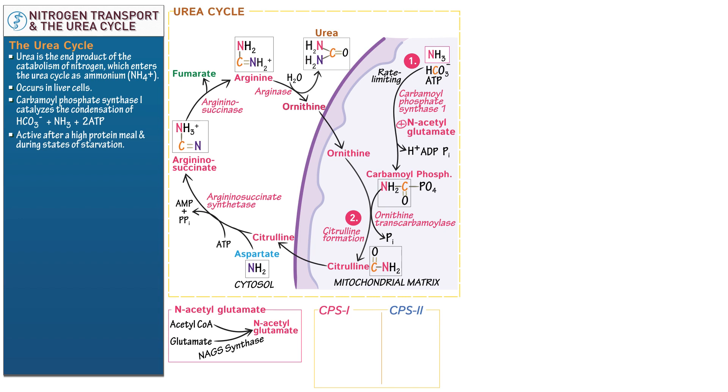In short, CPS1 exists in the mitochondrial matrix, whereas CPS2 is located in the cytosol, the cytoplasm. CPS1 uses ammonia as its nitrogen source, whereas CPS2 uses glutamine.